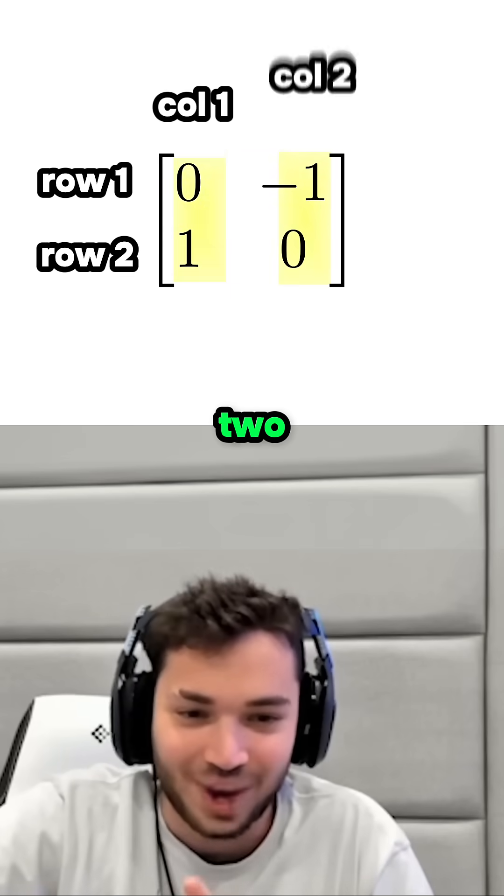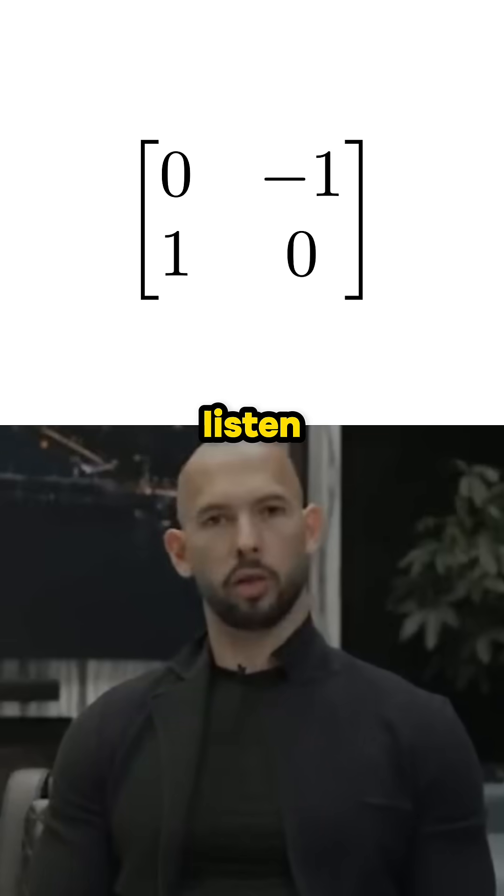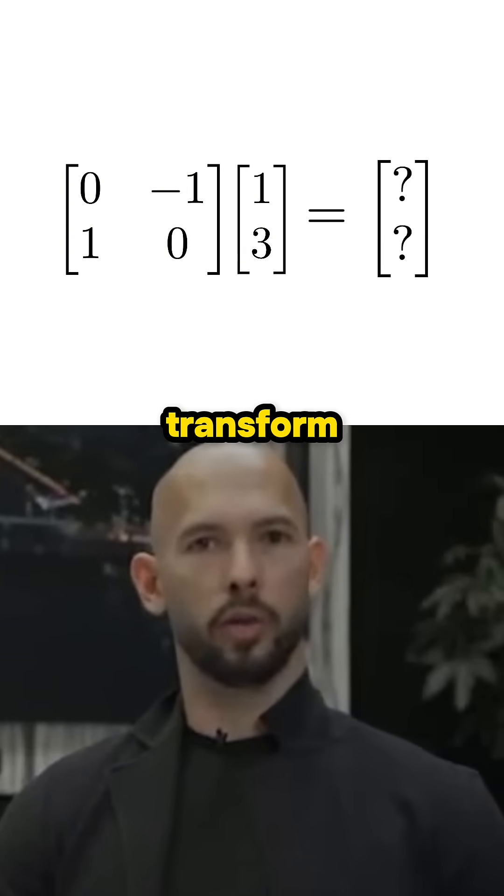This one has two rows and two columns, right Andrew? Yeah, that's correct. Now listen, if we multiply a matrix by a vector, this will transform the vector.